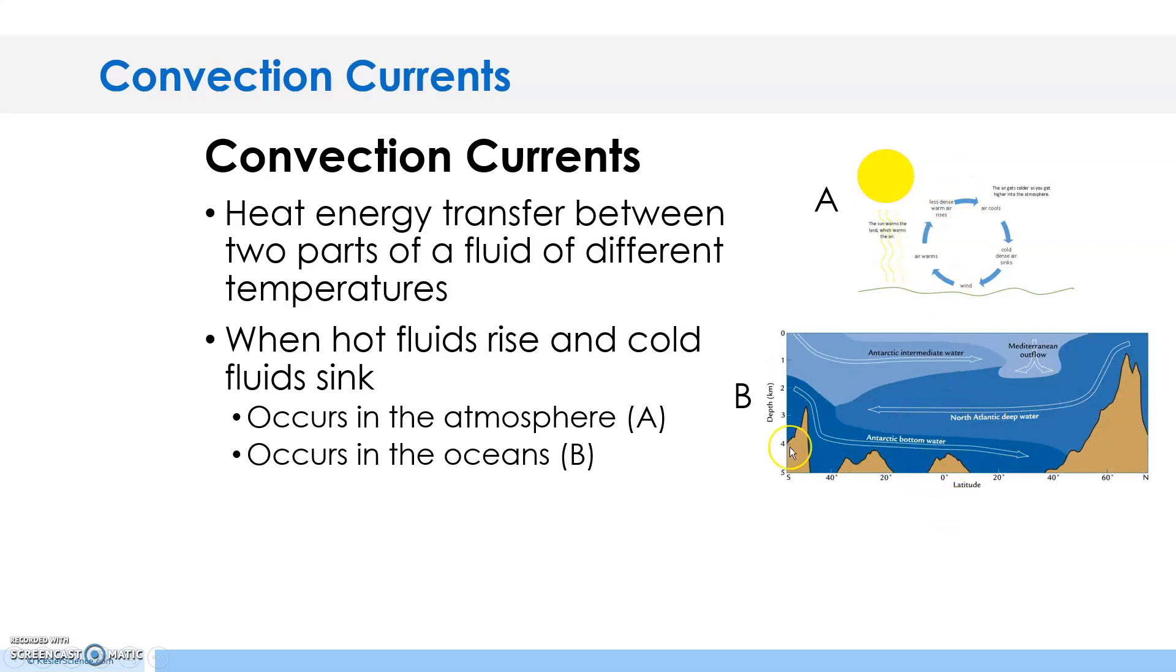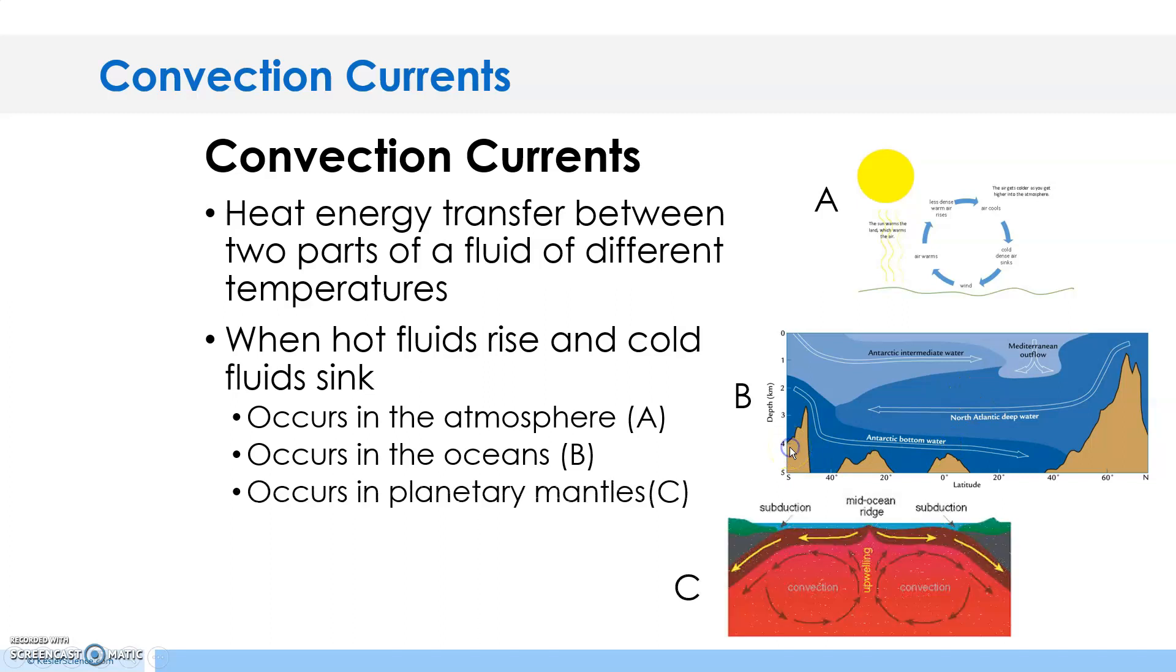Convection also occurs in planetary mantles. So in the layers of the Earth, the big layer called the mantle, we have convection currents. It can also occur in your soup when you're cooking on the stove - hot rises, cool sinks.